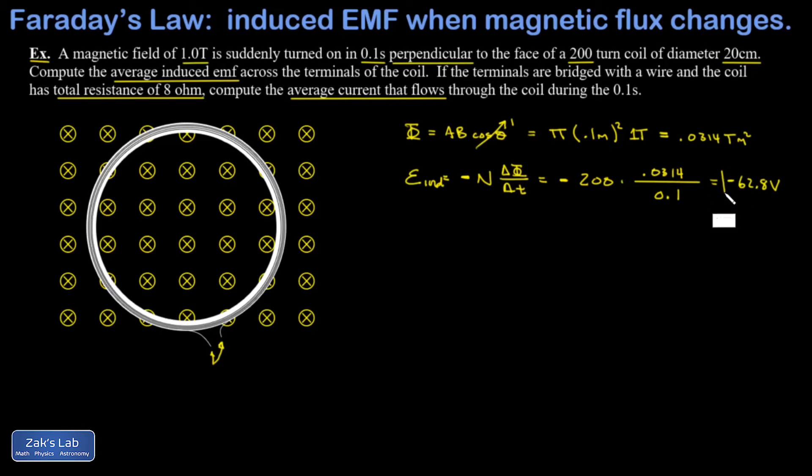Again, the minus sign just indicating the direction. It's just as correct in this case to just say, okay, my induced EMF is 62.8 volts. And we can agree the direction is given by Lenz's law. All right. So next, I tell you that the total resistance of the wire in this coil is 8 ohms. And I know that over this 0.1 second period, I have this average induced voltage of 62.8 volts.